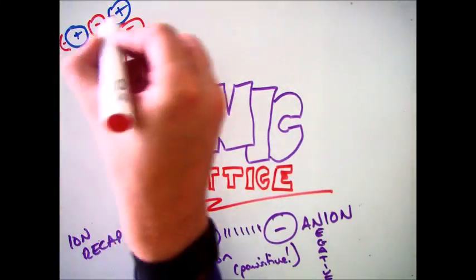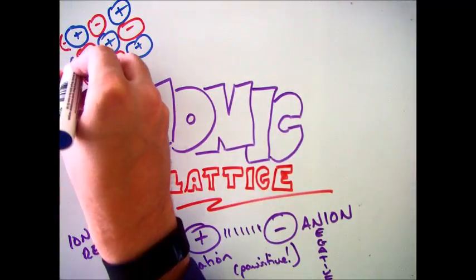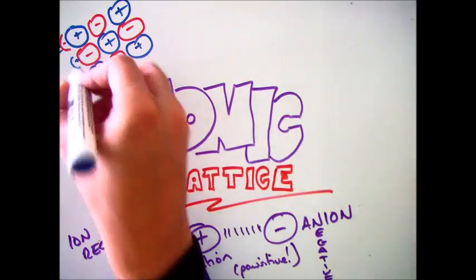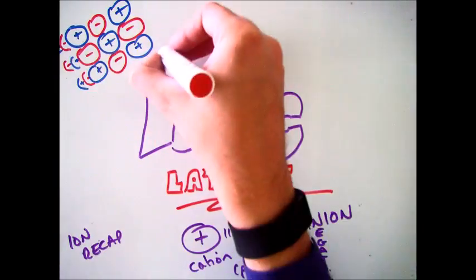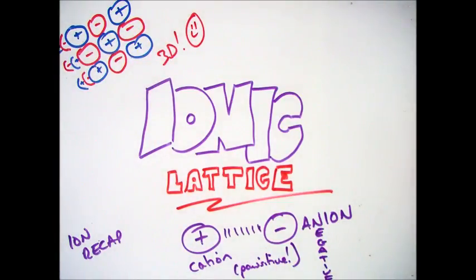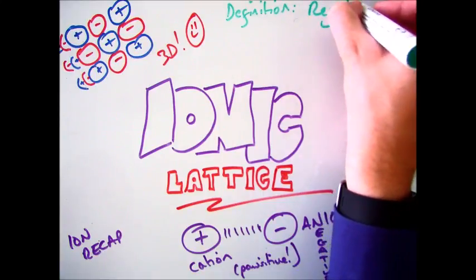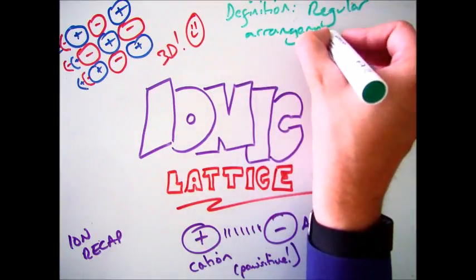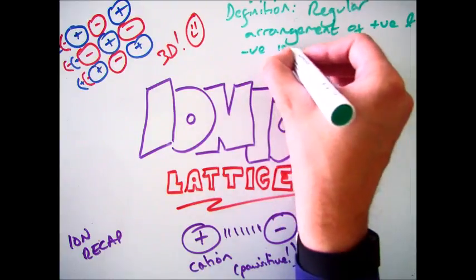And that will continue actually into a 3D shape. So every positive ion is surrounded by negative ions and every negative ion is surrounded by positive ions. That is what an ionic lattice is - a regular arrangement of positive and negative ions.